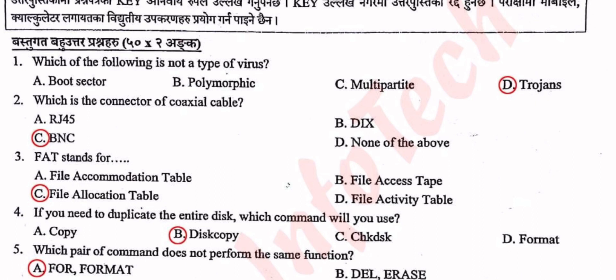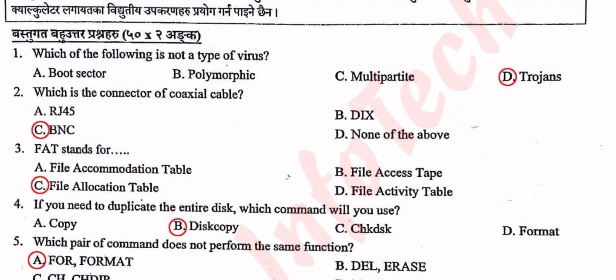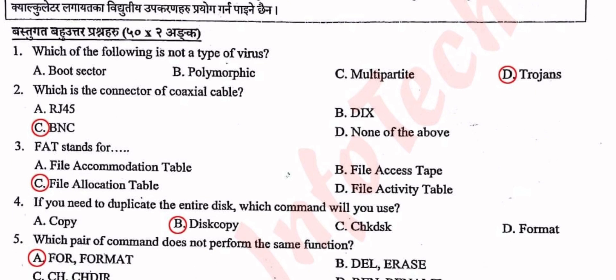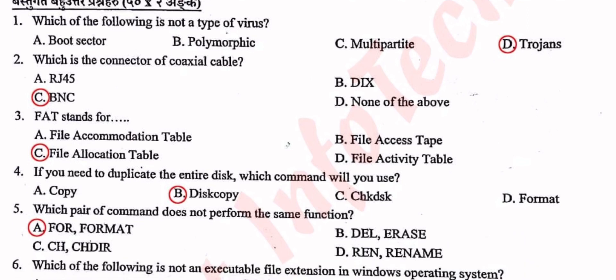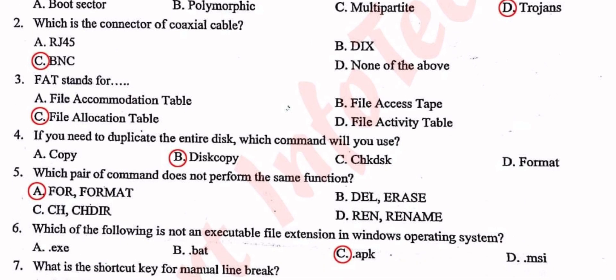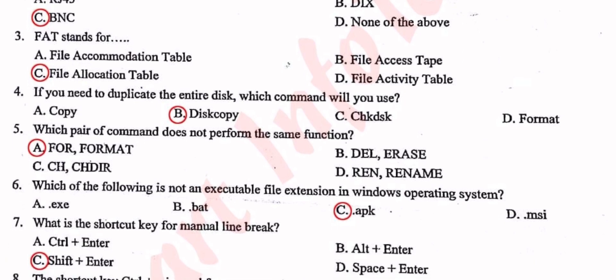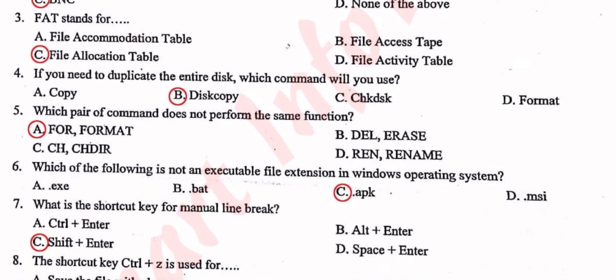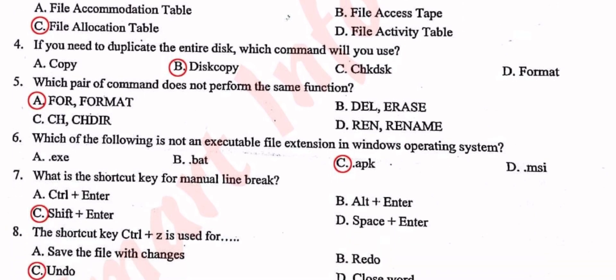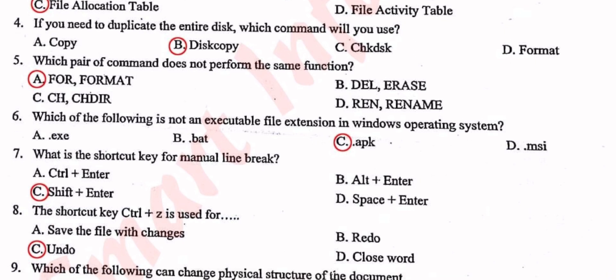Which of the following is not a type of virus? This is a type of virus. Which is the connector of coaxial cable? BNC. FAT stands for File Allocation Table. RAM is the most important thing. Which is a computer operator? This is GANMARK.COM.